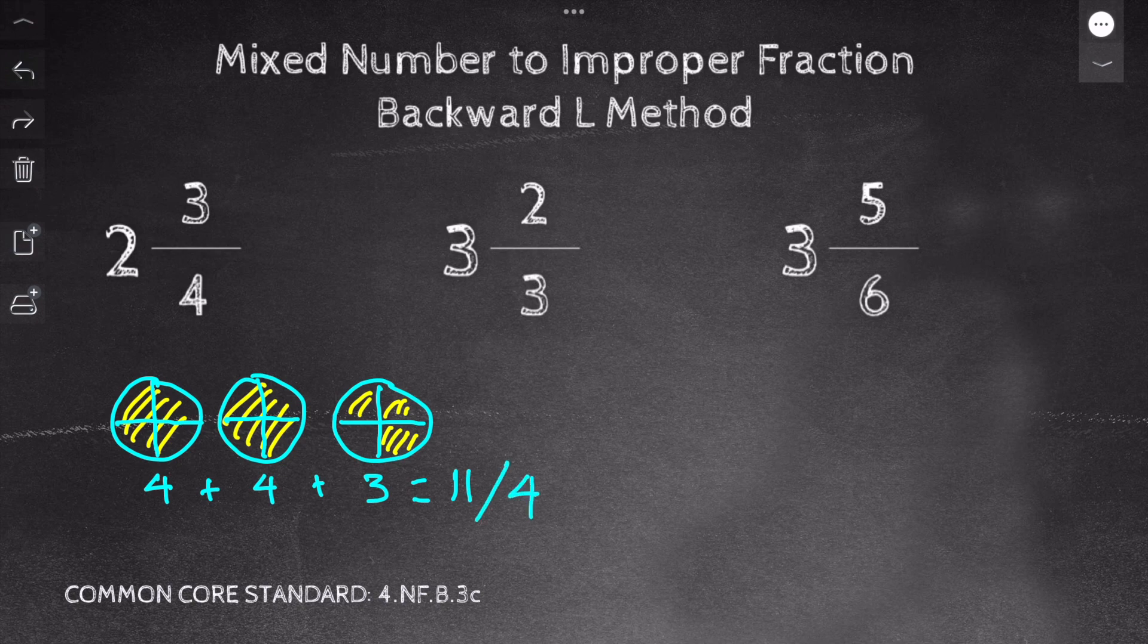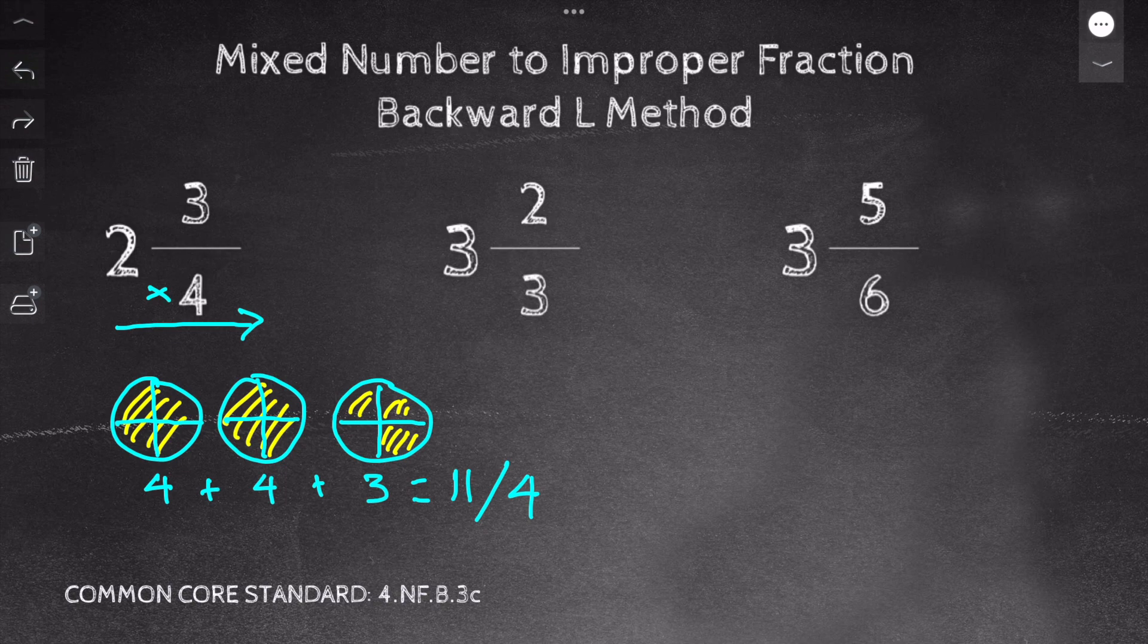Okay, so now let's jump to our backward L method. I'm first going to multiply 2 times 4, which equals 8. And you can see below I have two groups of 4.